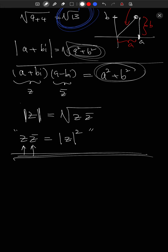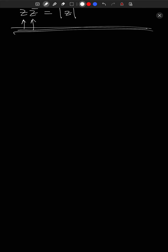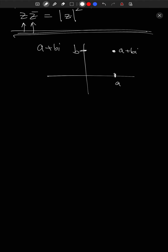Let's do more trig. Up to now we've been writing a + bi, and we've been visualizing it by going a along the x-axis and b along the y-axis. But we also figured out this length — √(a² + b²) — and we're going to call this length r. We're also going to look at the angle this makes with the x-axis and call that θ. So we're going to call the hypotenuse r and the angle θ.